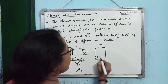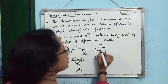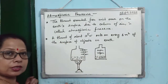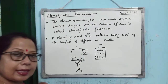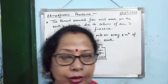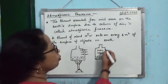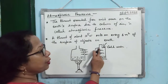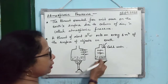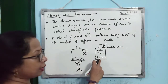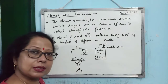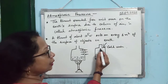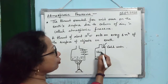Now inside the tin there is water and water vapour — no air, because the water vapour pushed the air out first and then occupied its place. Pour ice-cold water on the tin. The water vapour will condense into water and mix with the water below. When all water vapour condenses, a vacuum is created inside.